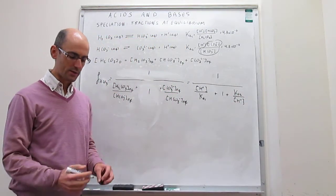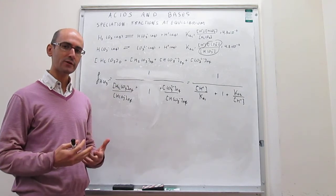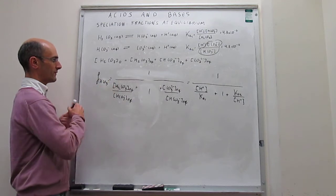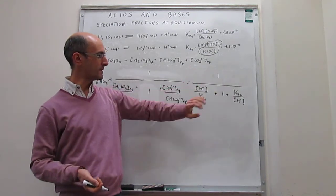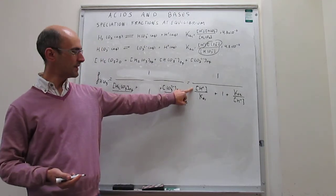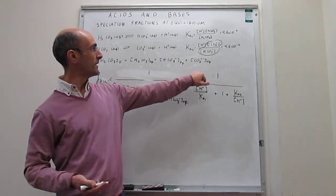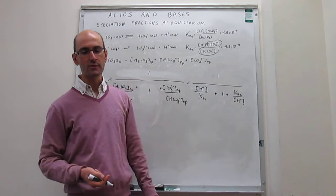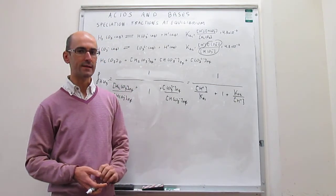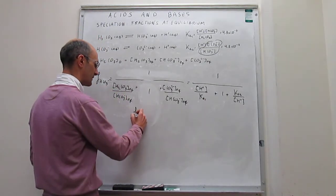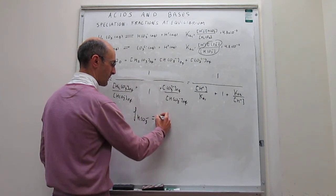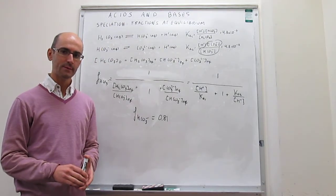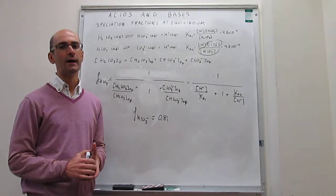We now have everything needed to answer the numerical problem. At pH 7, the proton concentration is 1×10⁻⁷. Ka1 is 4.3×10⁻⁷ and Ka2 is 4.8×10⁻¹¹. Plugging these into our expression gives a fraction of bicarbonate at equilibrium equal to 0.81. That tells us that about 81% of all species containing the carbonate moiety are in the form of bicarbonate at neutral pH.